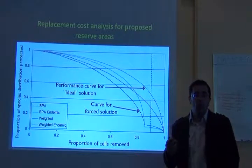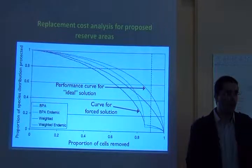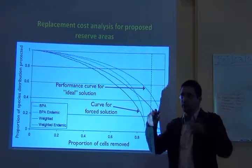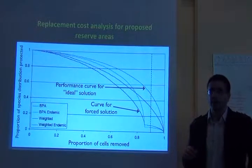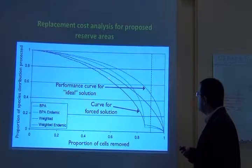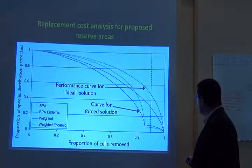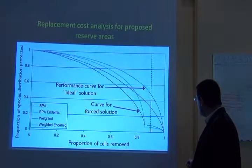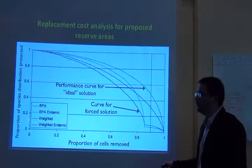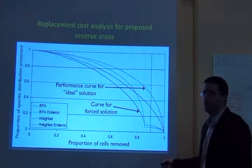But when you insert a layer of cost and say that costs are important and that there are some places that are very costly and can't be used, you get a totally different solution — the curve drops sharply. You can see that for the same 10% of area protected, you're only getting about 10 to 15% of species distribution protected.